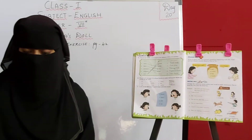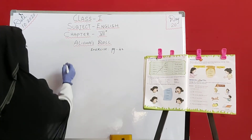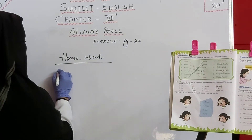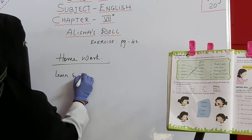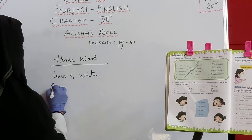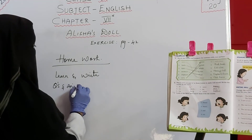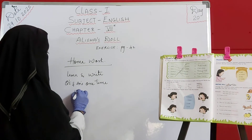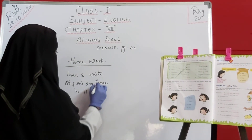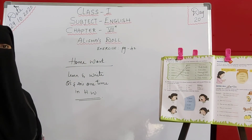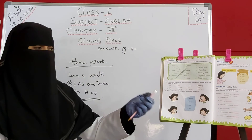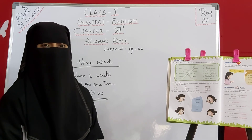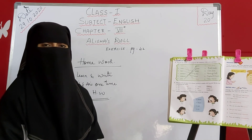So as for your homework, what do you have to do? Learn and write questions and answers one time in homework. Okay kids? So this is your homework. Hope you will do this one. Complete the exercise reader part and also write the homework part. Don't forget to write the meanings in your classwork. So till then stay home, stay safe and don't trouble your parents.